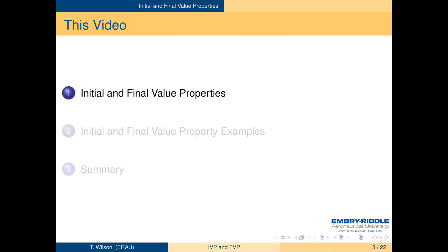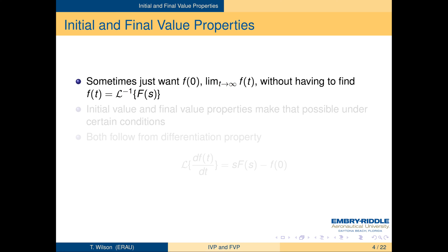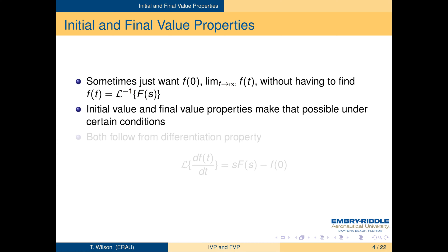Sometimes we want to find the value of a waveform at t equals 0, or as t goes to infinity, without going to all the trouble of finding the inverse Laplace transform. The initial value and final value properties allow us to do that in certain circumstances. Both properties follow from the differentiation property, which says that the Laplace transform of the derivative of a waveform is s times the Laplace transform of the waveform, less the value of the waveform at t equals 0.